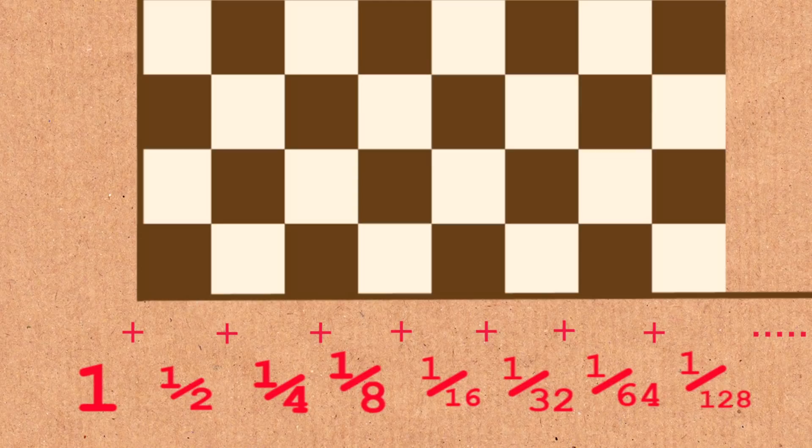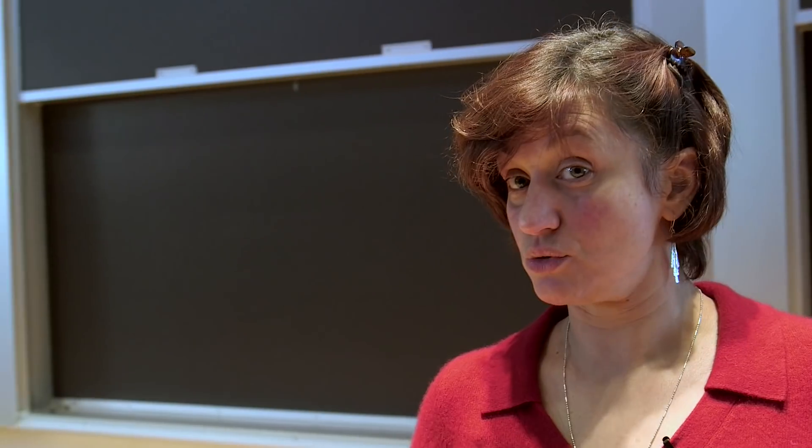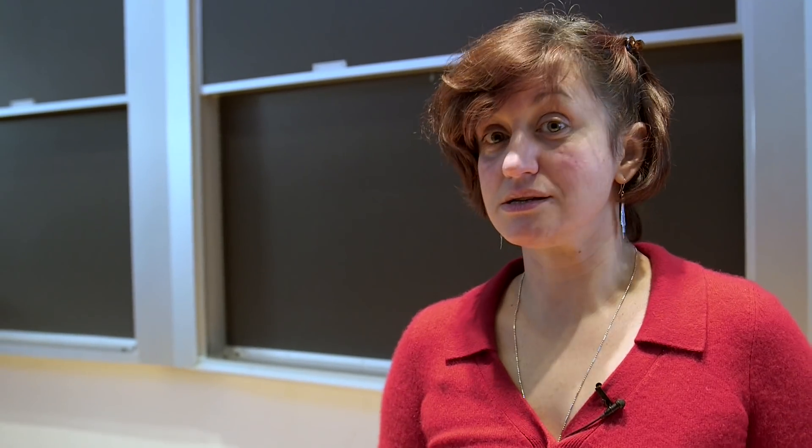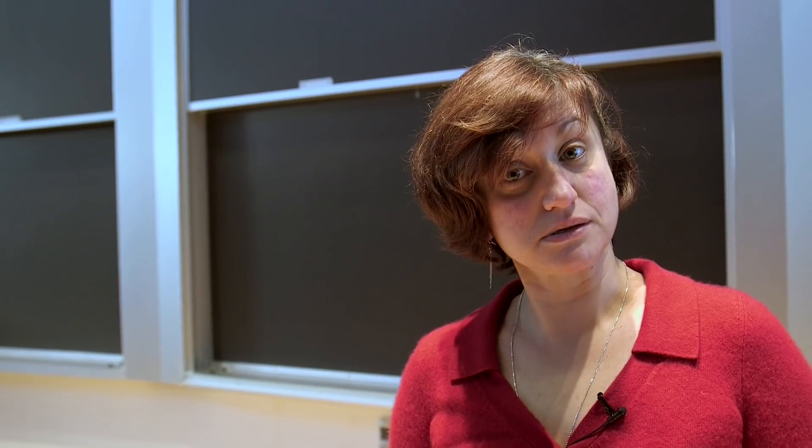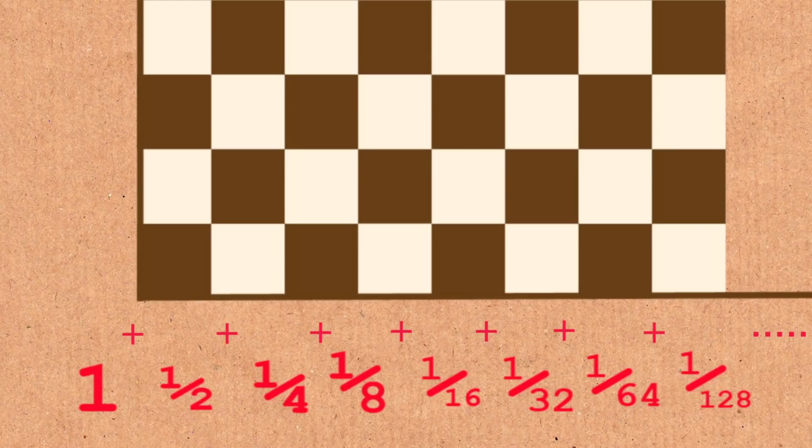We start adding up the numbers in the first row and this is a very interesting, perhaps familiar to some people sum. One plus a half plus a fourth plus one eighth and so on and so forth. If you have taken a calculus course you'll immediately recognize that this is something called the geometric series with first term one and ratio one half. Which simply means to get the next term you have to multiply the previous one by a half and this keeps on going forever.